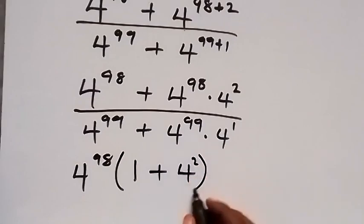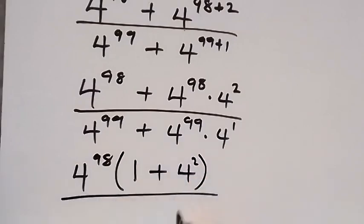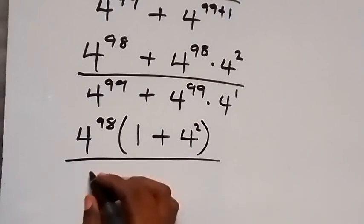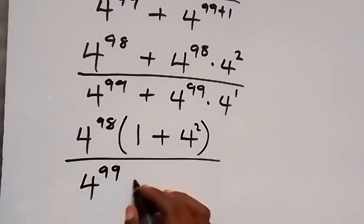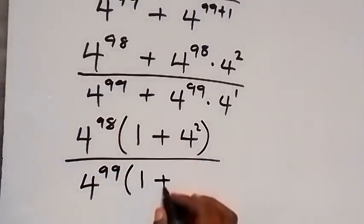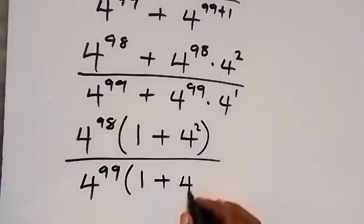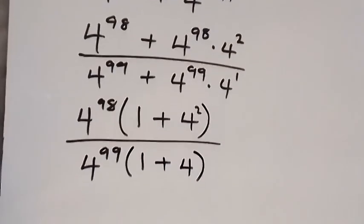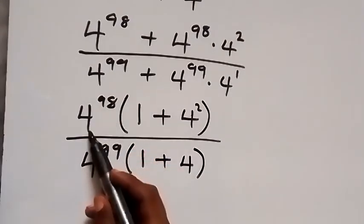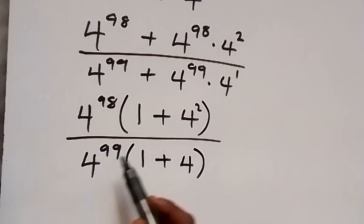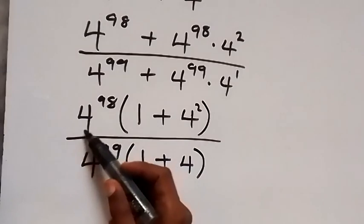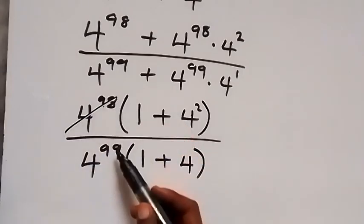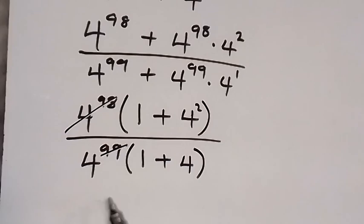Dividing, in the denominator we factor out 4 raised to power 99, giving 4 raised to power 99 multiplied by 1 plus 4. Since both numerator and denominator have the same base, we can divide: 4 raised to power 98 divided by 4 raised to power 99 gives 4 raised to power 98 minus 99, which simplifies by canceling to leave just 1 over 4.